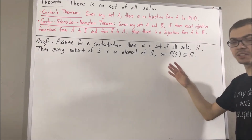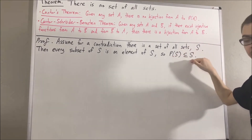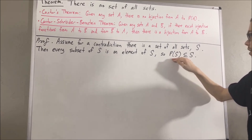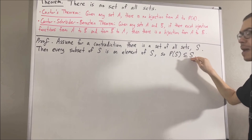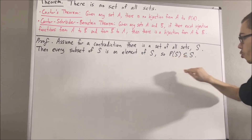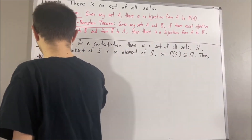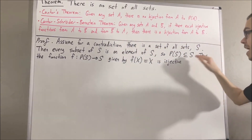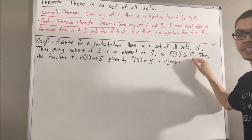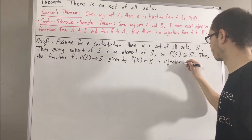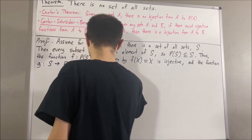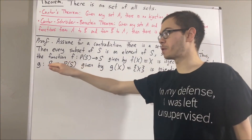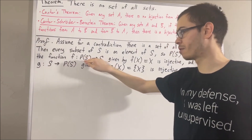The idea is we can construct an injective function from the power set of S to S, and we can construct an injective function from S to the power set of S. As for an injective function from the power set of S to S, we just map each element of the power set of S to itself. And as for an injective function from S to the power set of S, we just map each element of S to its singleton set.